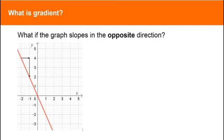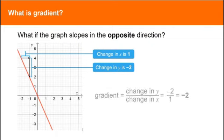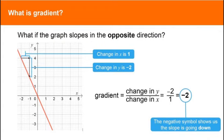But what if the graph slopes in the opposite direction? We still work out the change in y divided by the change in x. But this time, the answer is minus two. The negative symbol shows us the line is sloping the opposite way. Another way to think of this is that the graph goes down two units for every one unit across. So the gradient is minus two.